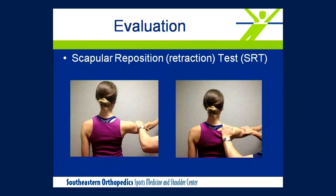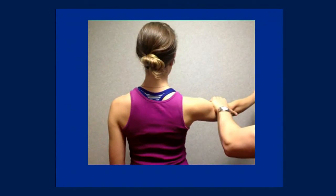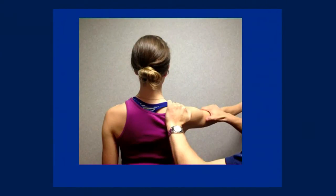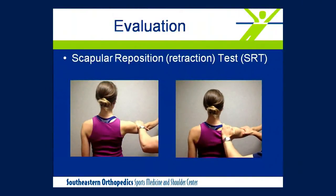The Scapular Retraction Test (SRT) positions the patient for supraspinatus strength testing; the clinician applies a downward force and assesses pain, then applies scapular retraction and repeats. A reduction in pain is a positive test. Positive results on either the SAT or SRT indicate that pain is specifically scapular-position-based, which also guides treatment — these patients are more likely to respond to scapular-focused interventions, while those who don't show reduction may need a different approach.